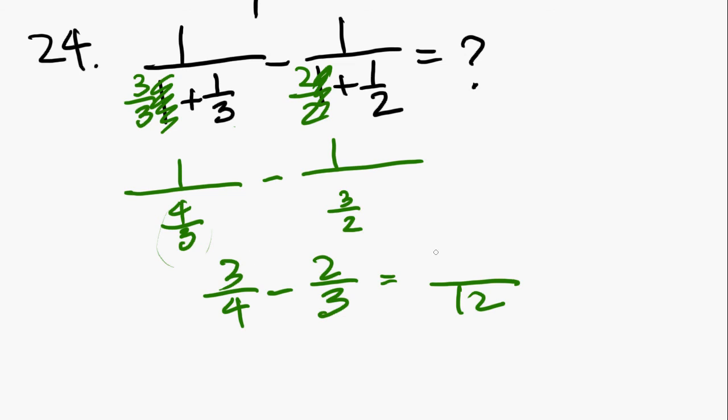Cross multiply, 3 times 3 is 9 minus 8, because you take 2 and 4. And you get 1 over 12. That is answer choice D. Alright, and I will continue this in the next video.